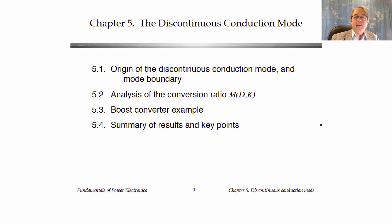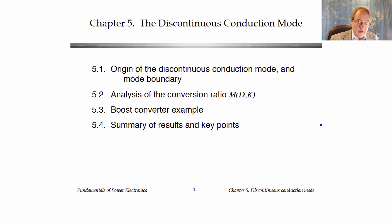Having discussed how to realize switches using semiconductor devices and implement single or two quadrant switches in a switching converter, we're now in a position to discuss what is known as the discontinuous conduction mode. Chapter five covers the origin of the discontinuous conduction mode, how to solve it, and we'll do examples of solving buck and boost converters that operate in this discontinuous conduction mode.